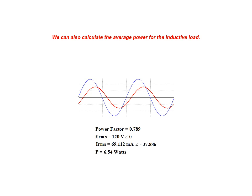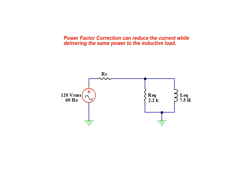To recap: our circuit has a power factor of 0.789, is supplied by an RMS voltage source of 120 volts, and draws an RMS current of 69.112 milliamps while providing 6.54 watts of true power. Power factor correction can reduce this amount of current while delivering the same power to the inductive load.